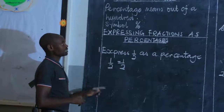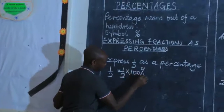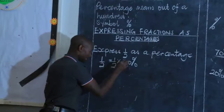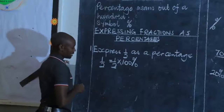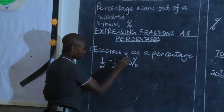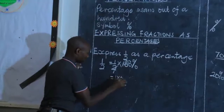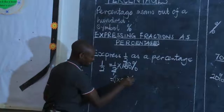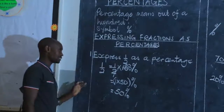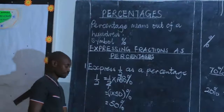...and since a percentage means out of a hundred, you multiply that fraction by 100%. So one half times 100%. We can reduce: 2 divided by 2 is 1, 100 divided by 2 gives 50. Therefore, we have 1 times 50, and the unit is percent. This gives us 50%. That means that one half is equivalent to 50%.